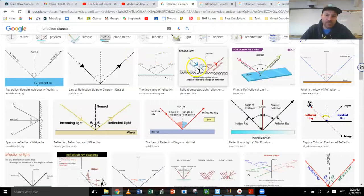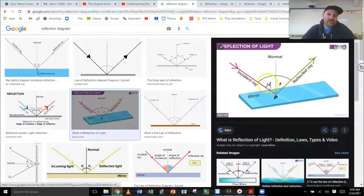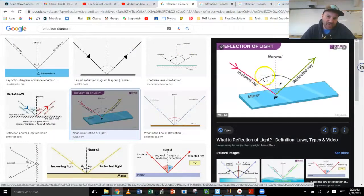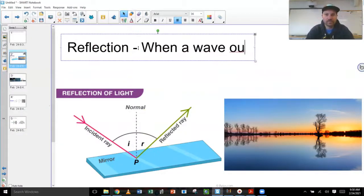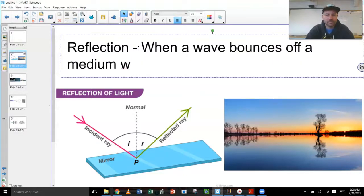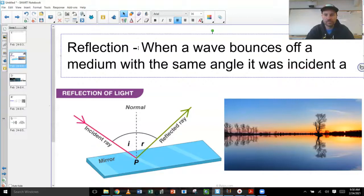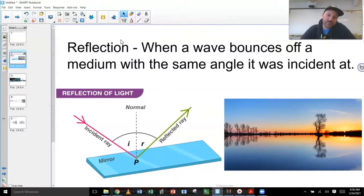And there's this thing, it's called the law of reflection. And the law of reflection says that this incident angle to the normal, the incident angle is going to be equal to the reflected angle. So these two angles right here are the same. So reflection, when a wave bounces off a medium with the same angle that it was incident at.